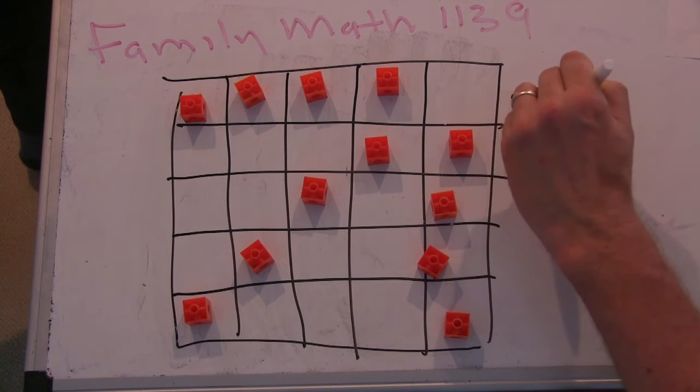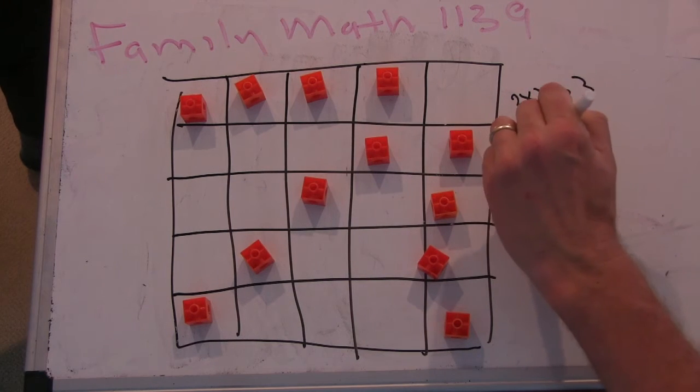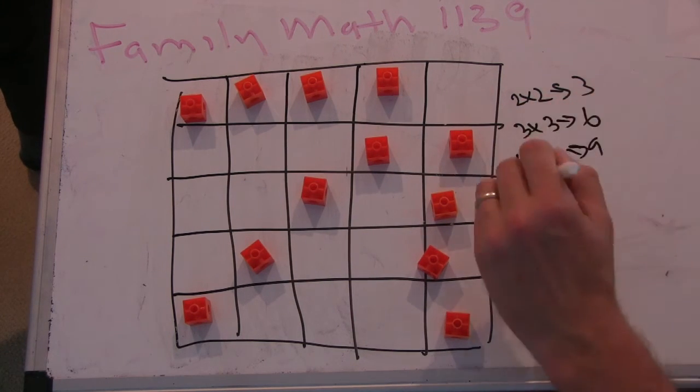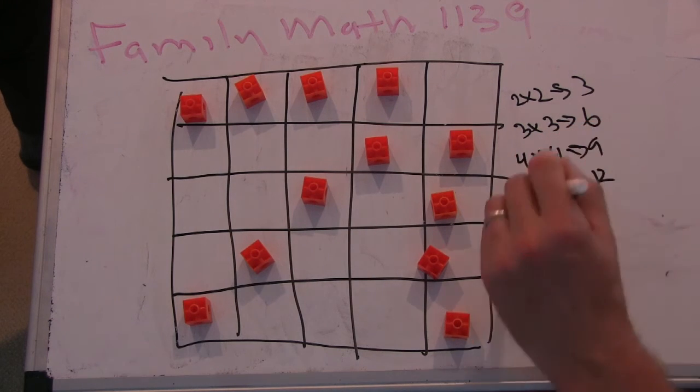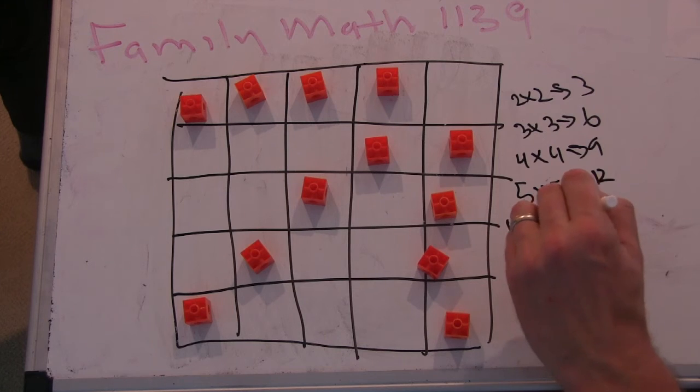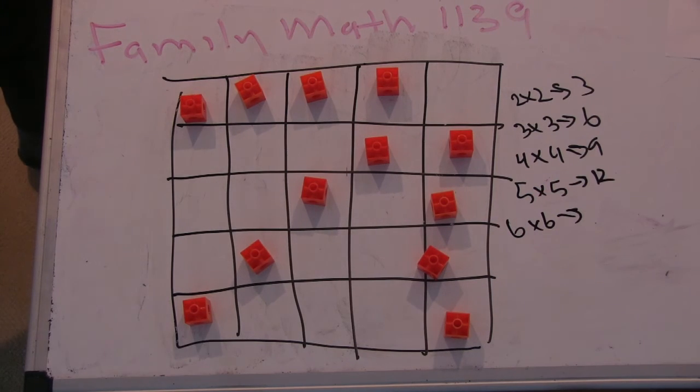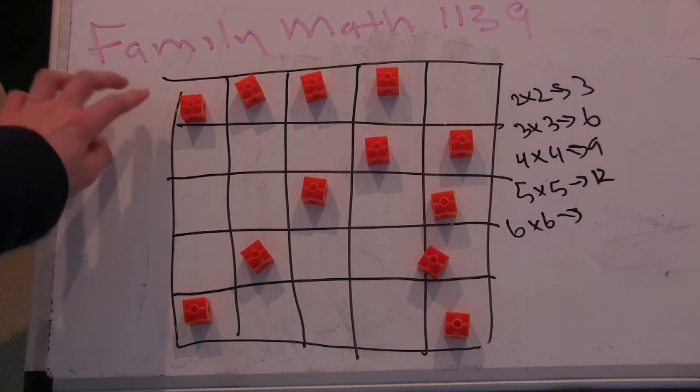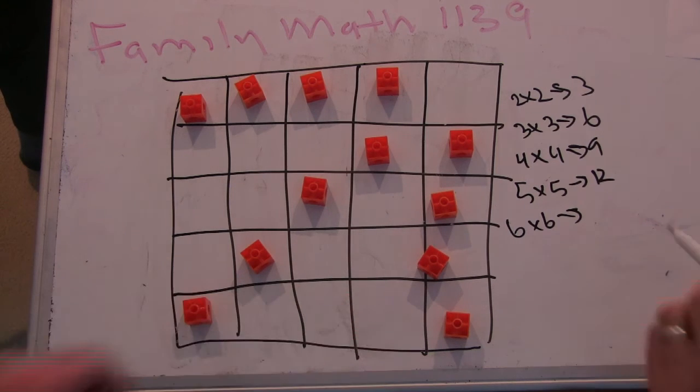The 3x3 case is 6. The 4x4 case is 9. The 5x5 case is 12, which would lead you to guess that the 6x6 case would be 15. You can just add a rectangle here, here, here, and here as your dots.